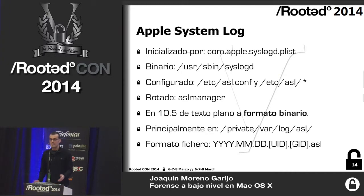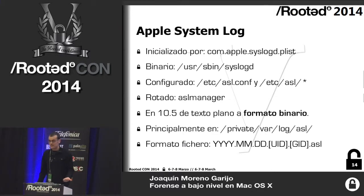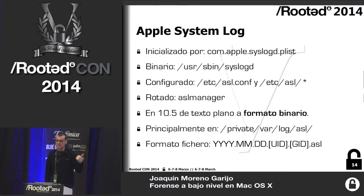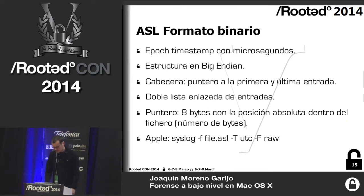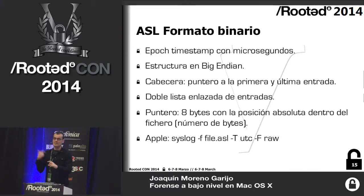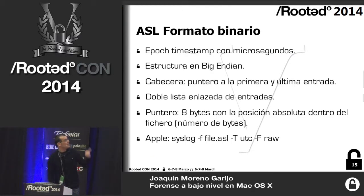Apple System Log (ASL) has always been there. From version 10.4, Mac OS X implements a binary format — it no longer writes in text format. No one knew how this format worked; there are some programs such as NCASE that handle it, but there is no official documentation. You find ASL files in /private/var/log/asl/. The filename format includes the creation date and the user — that is, the people who have permission to read it. This is a big-endian binary format with a full timestamp. The header tells you about the first and last entries, and there is a doubly-linked list structure.